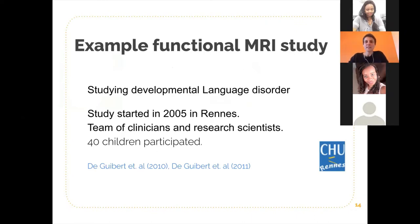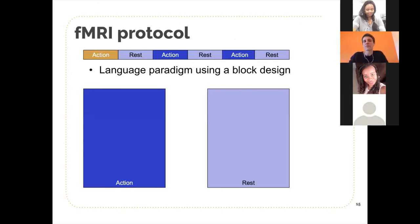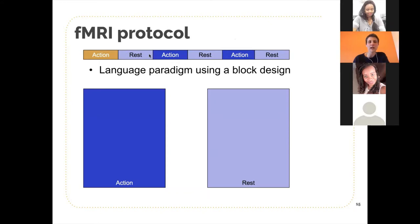I'll start by presenting an existing functional MRI study that was run in Rennes in 2005. The goal of this study was to look at developmental language disorders. Basically 40 children participated, and the goal was to use functional MRI to better understand how their brains work. In functional MRI, we typically have different phases: action phases and rest phases where we ask the participant to stay still in the machine.